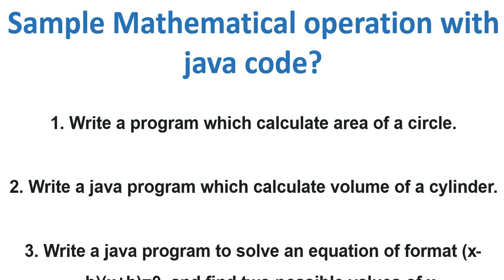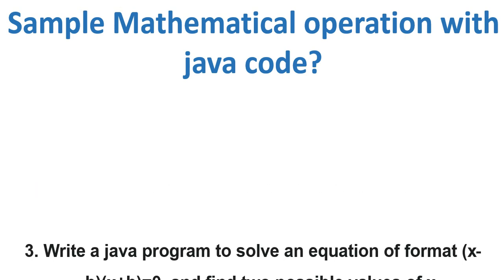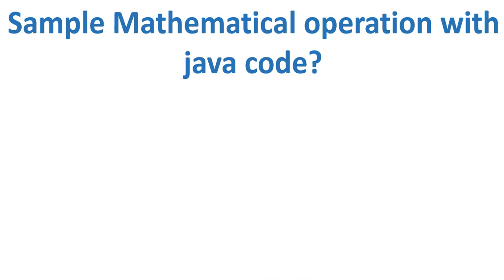If you want me to create a new video solving one of these three, just give a comment so I know which program you want. Number one: write a program which calculates area of the circle — formula is pi r squared. Number two: write a Java program to solve the equation in the format X minus B times X plus B, and find two possible values of X.